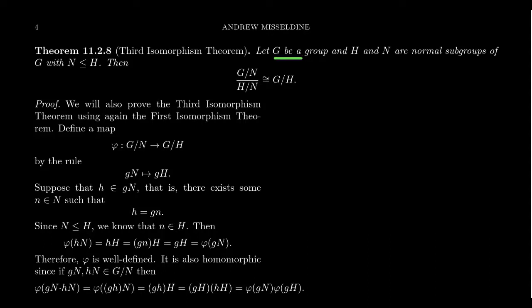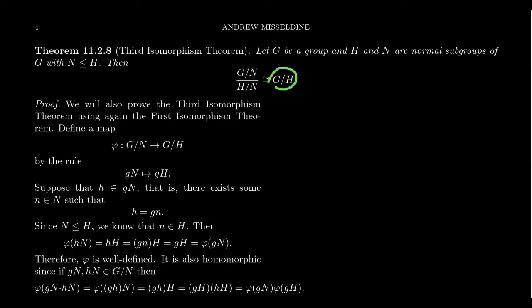Let G be a group — finite or infinite, it doesn't matter. We're going to take two normal subgroups of G. So both H and N are normal subgroups of G. We're also going to have the stipulation that N is a subgroup of H. Those are our assumptions. The third isomorphism theorem tells us that if we take the quotient group G mod N and we mod it out by H mod N, which is a subgroup of G mod N, that's isomorphic to G mod H.